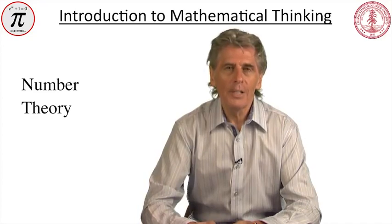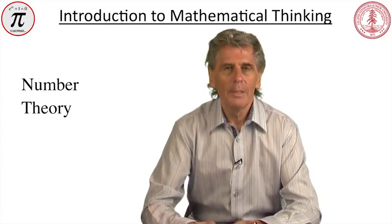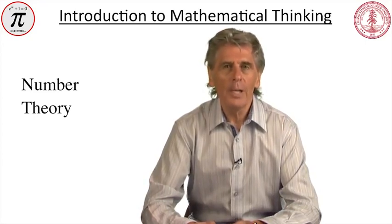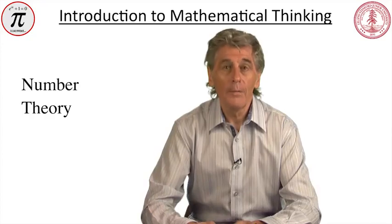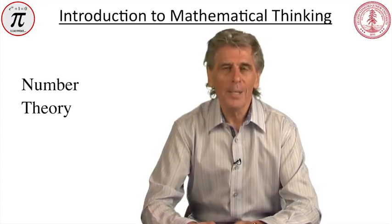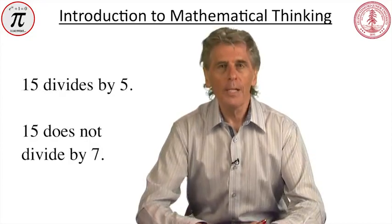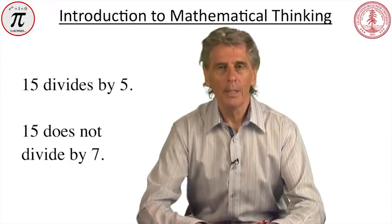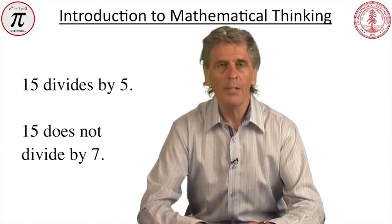The mathematical interest in the integers lies not in their use in counting, but in their arithmetical system. Given any two integers, you can add them, subtract one from the other, or multiply them together, and the result will always be another integer. Division is not so straightforward, and that's where things get particularly interesting. For some pairs of integers, say 5 and 15, division is possible. 15 divides by 5 to give the integer result 3. For other pairs, say 7 and 15, division is not possible unless you're prepared to allow fractional results, which takes you outside the integers.